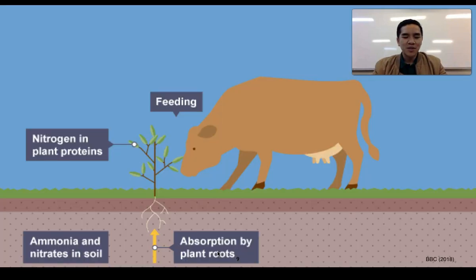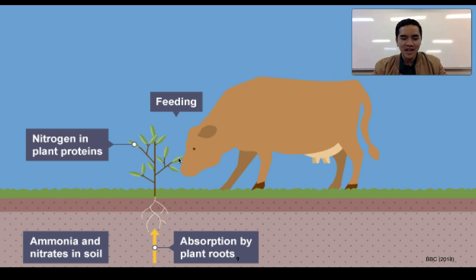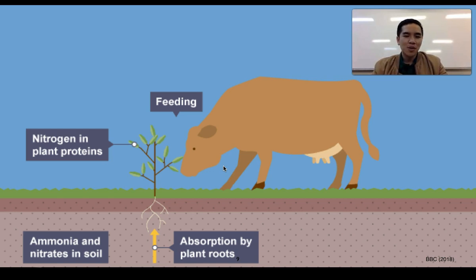Plants absorb this nitrate for their own growth. However, plants are a source of food for many organisms, so consumers obtain their source of nitrogen by consuming plants — in particular proteins and nucleic acids where nitrogen-based compounds are found. These consumers break them down and convert them to produce their own proteins and nucleic acids to assist in their growth, and certain consumers can then be preyed upon by others, which is how those organisms obtain their source of nitrogen.